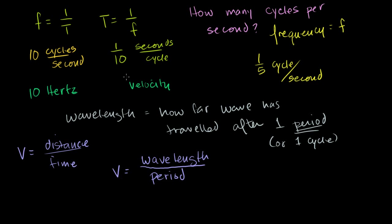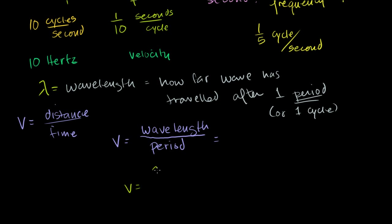Since 1 over the period is the same thing as the frequency, we can rewrite this. The notation for wavelength is the Greek letter lambda. So velocity equals wavelength over period, which equals wavelength times 1 over the period, which is the frequency. So velocity is equal to wavelength times frequency. If you know this, you can solve all of the basic problems you might encounter with waves.